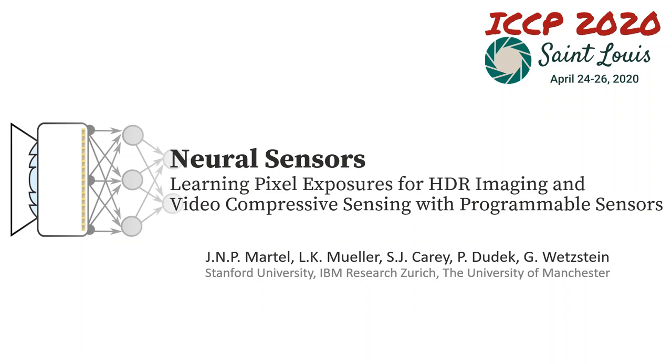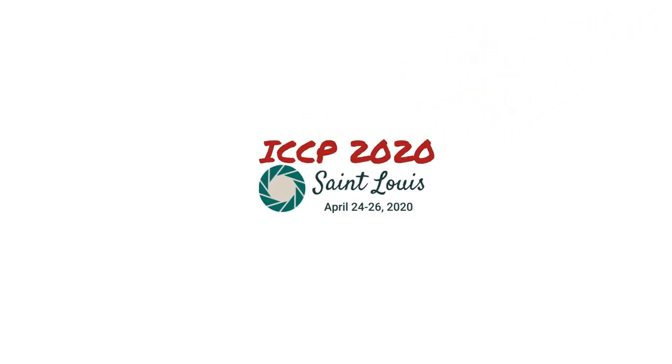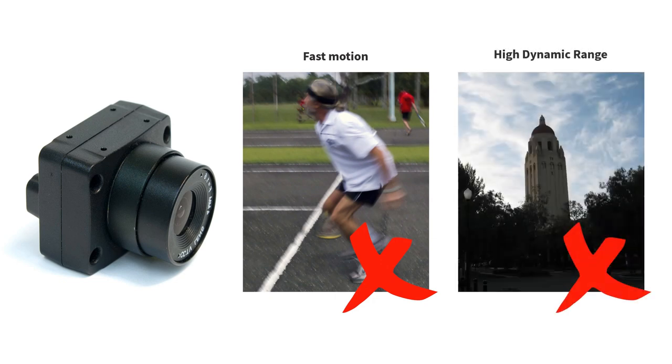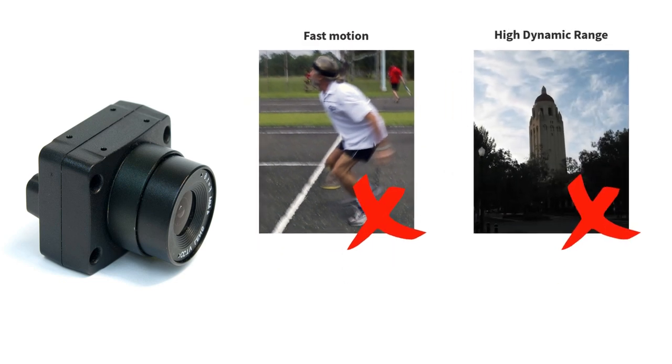We present Neural Sensors, learning pixel exposures for HDR imaging and video-compressive sensing with programmable sensors. Conventional cameras are limited in their ability to capture fast motion and high dynamic range because of their fixed shutter duration.